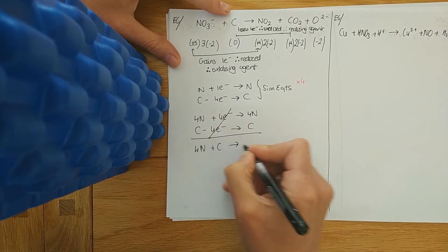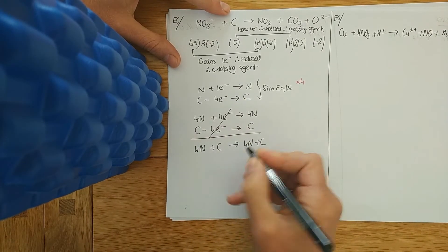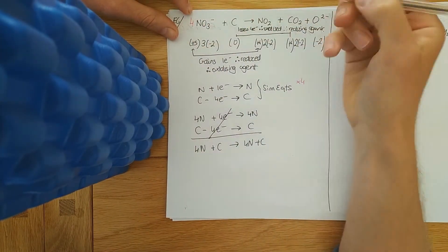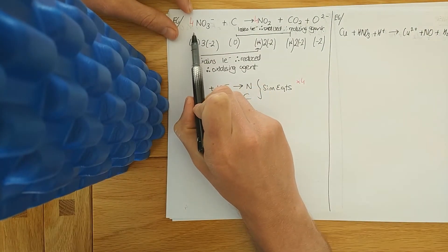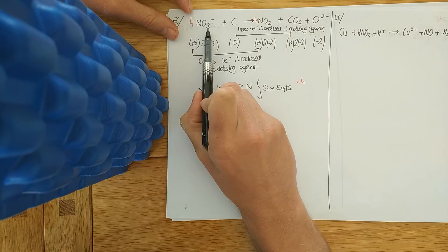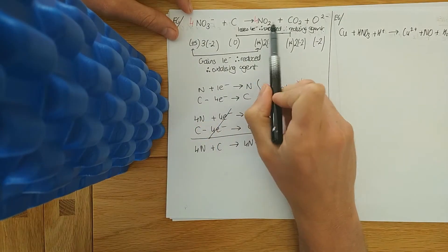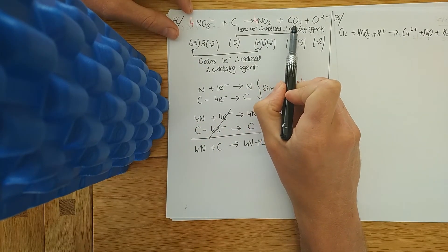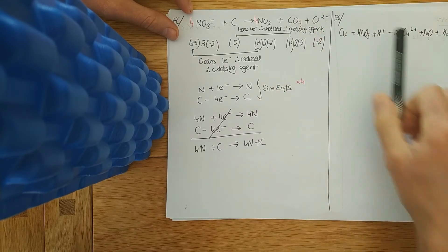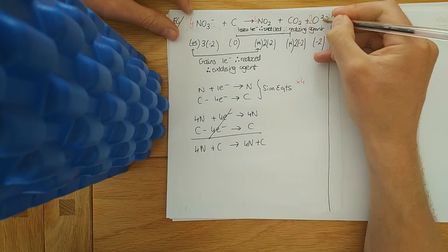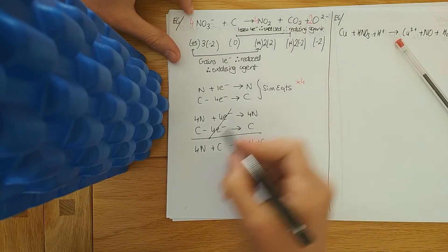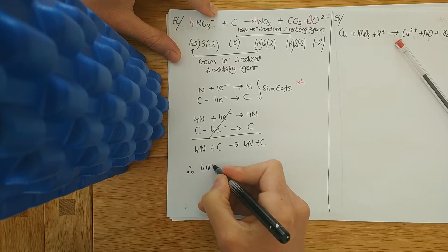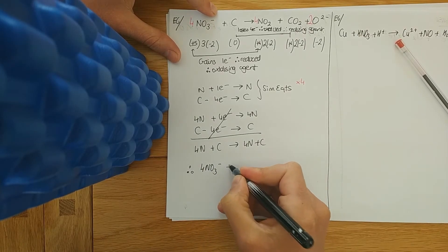Throw those big numbers in front of where the nitrogens are. For visual inspection, look at any atoms that haven't been balanced yet — just oxygen. You have twelve oxygens on the left-hand side; bring in a two. Remember that's not the number of oxygens, it's just a charge. The balanced equation for NO3⁻ with nitrates is then fully written.